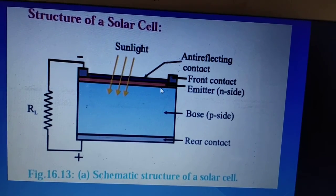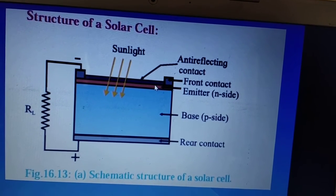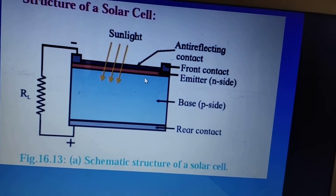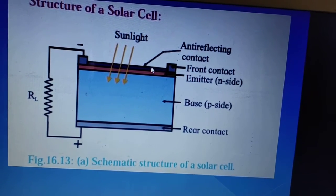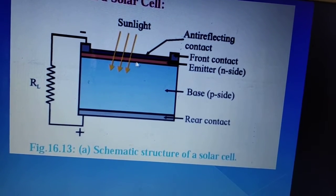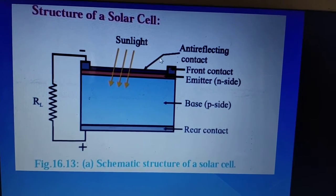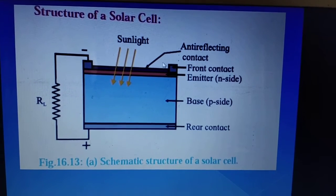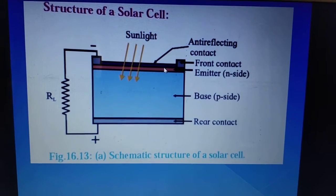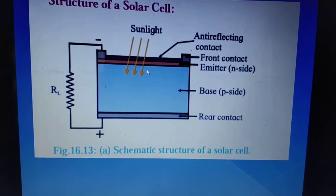Above the base we have the n-type semiconductor and on the n-type semiconductor, see between the p and n, this is a junction here. And above this n-type semiconductor, there is a front contact here on both sides. Also, there is an anti-reflecting contact. That means whatever sunlight falls on this material, it is totally absorbed and not reflected back.